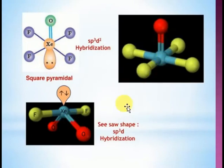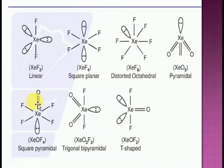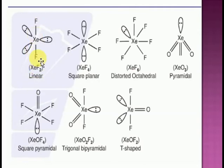The structures of xenon compounds are very important. Xenon contains eight electrons in the outermost shell. In XeF₂: two electrons take part in bond formation, six remain as three lone pairs — sp³d, linear. In XeF₄: four electrons form bonds, four remain as two lone pairs — sp³d², square planar. In XeF₆: six electrons form bonds, two remain as one lone pair — sp³d³, distorted octahedral.